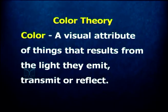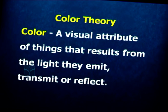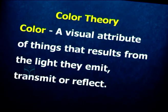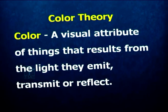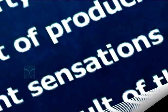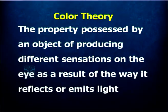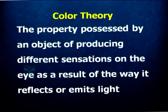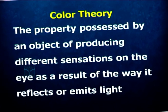When it comes to color, the color of the object we see is related to the way we see. Color is not limited to the object; the operation of color and color theory is linked with the viewer also. It is not only the object but also the viewer. So let us look at the definition of color. Color is a visual attribute of things that results from the light that they emit, transmit, or reflect — the property possessed by an object of producing different sensations on the eye as a result of the way it reflects or emits light.